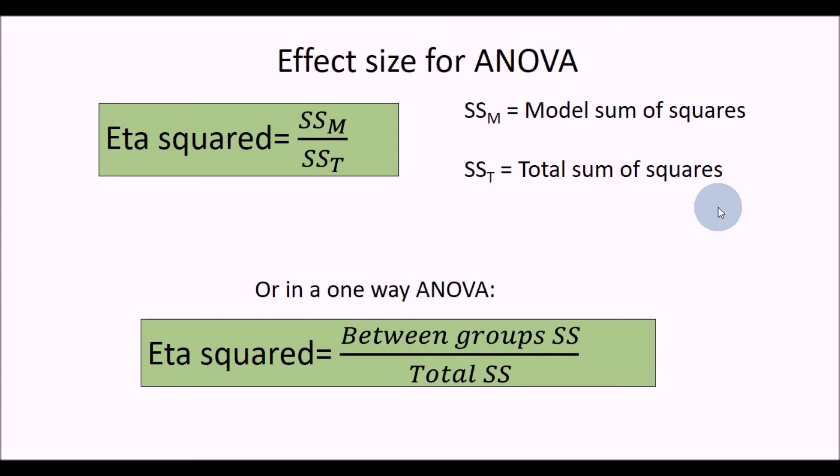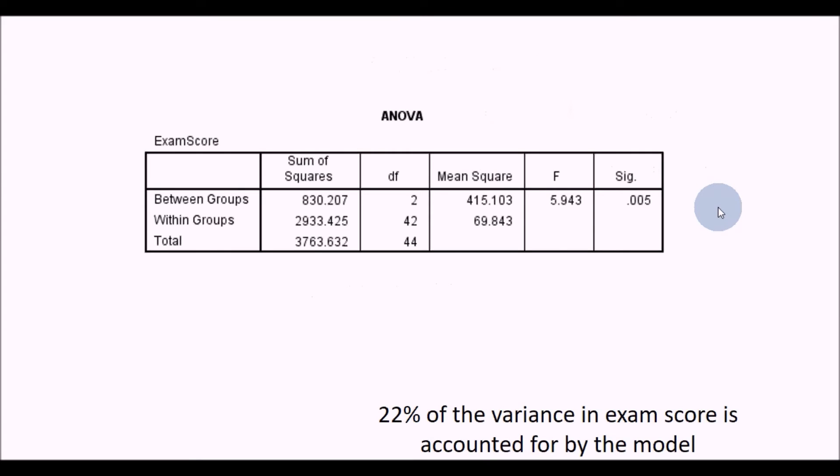We'll stick with this one because it's the most widely used effect size. Eta squared is based on dividing model sum of squares by the total sum of squares to give you a proportion. It's always between 0 and 1, and it's a nice, handy, easily interpretable effect size because it's the proportion of the variance in exam scores which is accounted for by this model. In a one-way ANOVA, you can see eta squared is simply the between groups sum of squares, which is the same thing as the model sum of squares, divided by the total sum of squares.